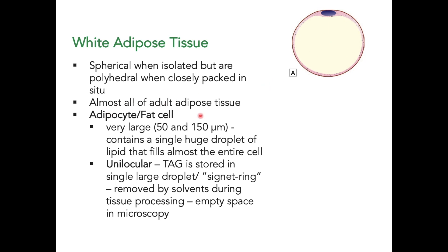Almost all adipose tissue in adults is considered white adipose tissue. They are very large, around 50 to 150 micrometers. Since there is only one lipid droplet, this is termed unilocular.